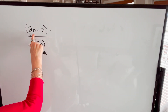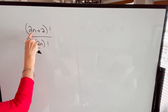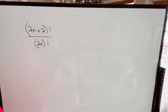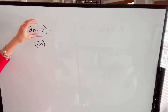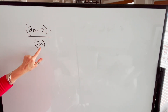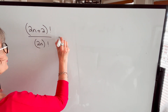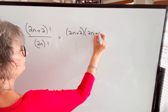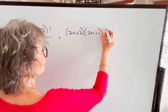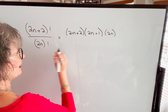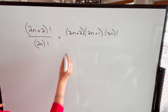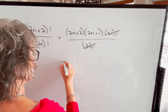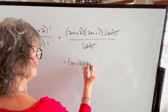Our last example looks a little different because we have a coefficient. The numerator is (2n+2)! and the denominator is (2n)!. Since 2n+2 is two more than 2n, we break this factorial down: (2n+2) times (2n+1) times (2n)!. The denominator is (2n)!, we cancel that, and our result is (2n+2) times (2n+1).